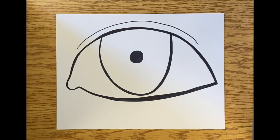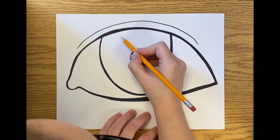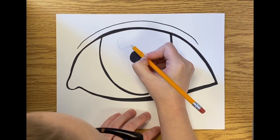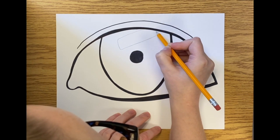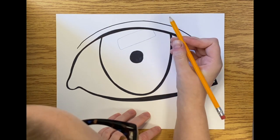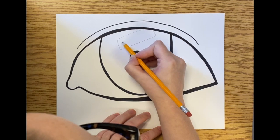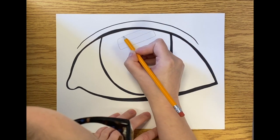Now it's time for the really fun part. All in the iris of our eye, we are going to draw something that we love doing or something that means a lot to us. So for me, I'm going to be drawing a bunch of different art supplies because art is so important to me.